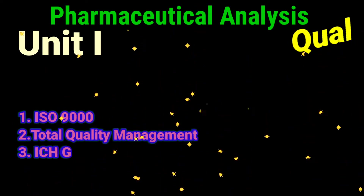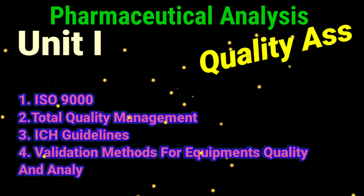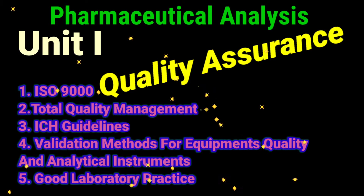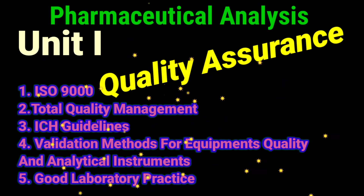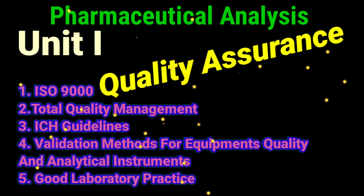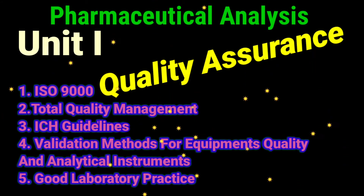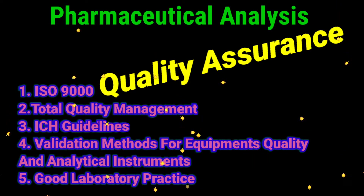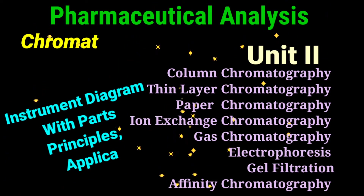The first unit is Quality Assurance. In this unit, the important topics include ISO 9000, Total Quality Management, ICH guidelines, validation methods for equipment, quality and analytical instruments, and Good Laboratory Practice. Five important questions have been categorized from Unit 1, and students should study these five sub-topics thoroughly, prepared from the previous year question bank.